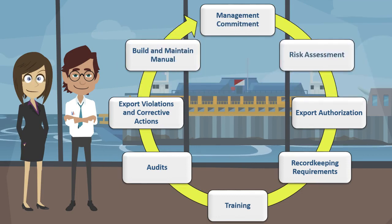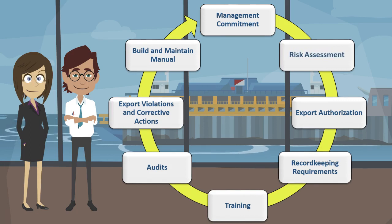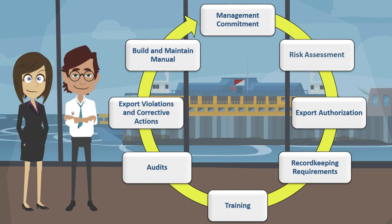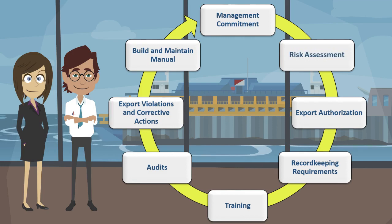A circular chart appears with all eight elements on the circle. The eight elements are: Management Commitment, Risk Assessment, Export Authorization, Record-keeping Requirements, Training, Audits, Export Violations and Corrective Action, and Build and Maintain Manual.